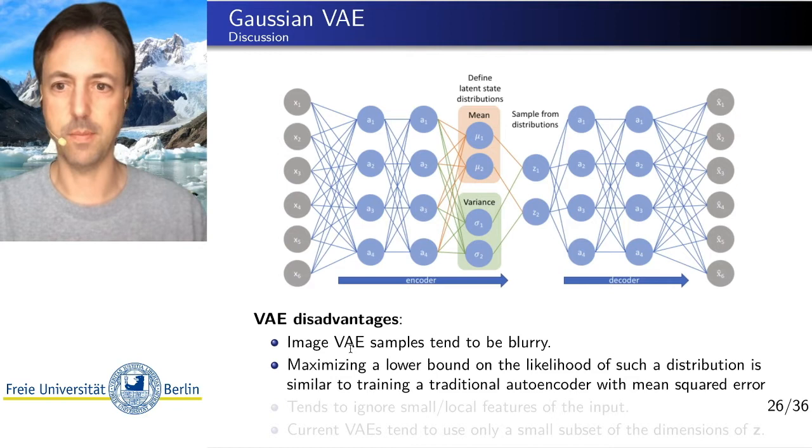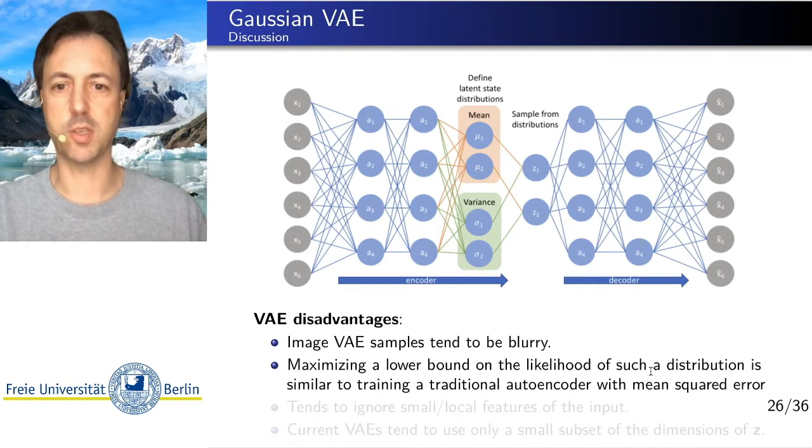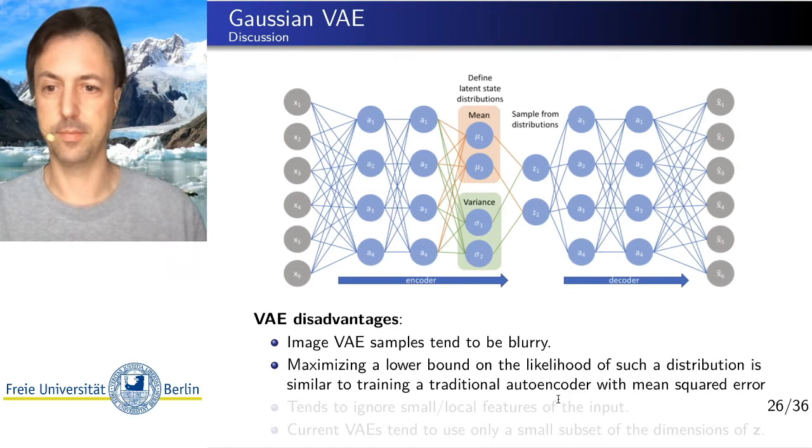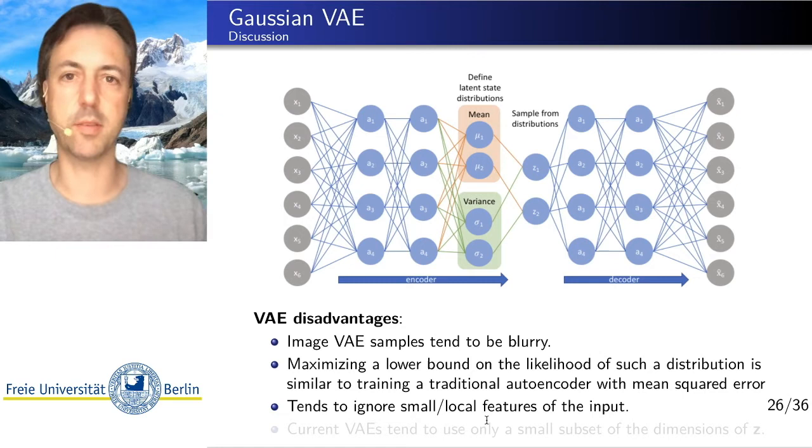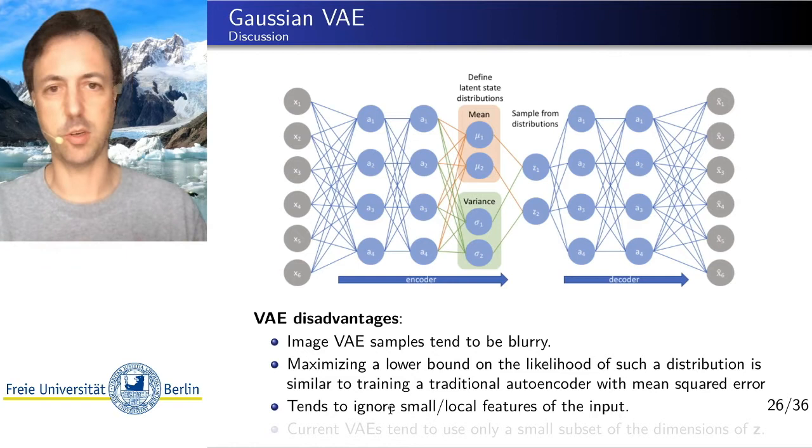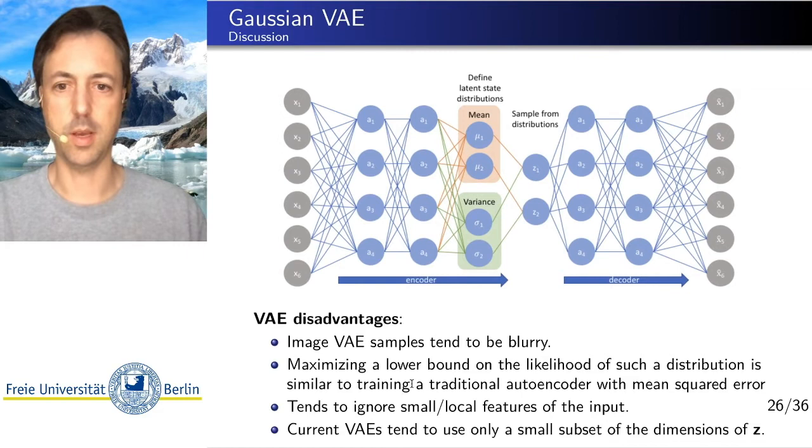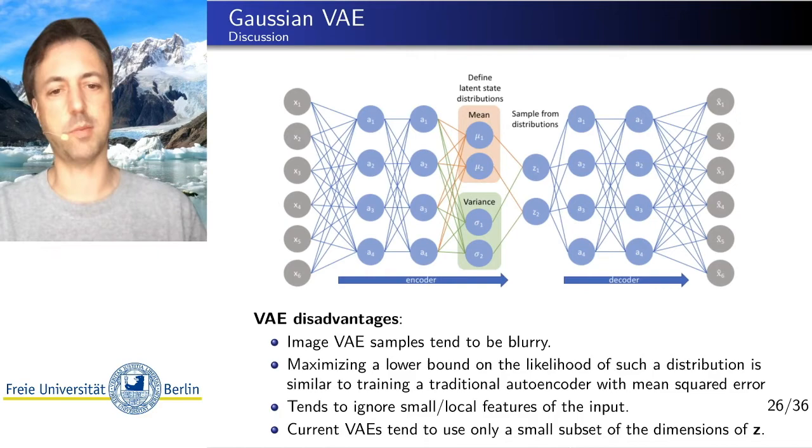And maximizing the lower bound of the likelihood of such a distribution is similar to training a traditional autoencoder with a mean squared error. So because of this blurriness, the VAE tends to ignore small or local features of the output. So often we don't get very sharp edges or things like that. And often times, variational autoencoders tend to use only a small subset of the dimensionality of latent space that is being offered to it.